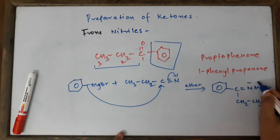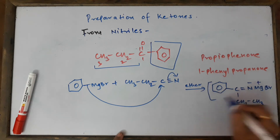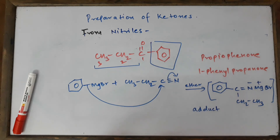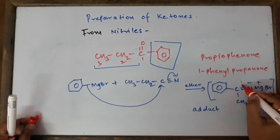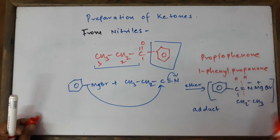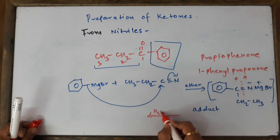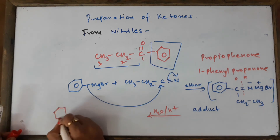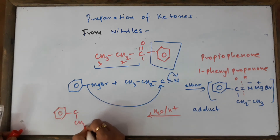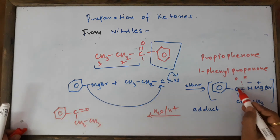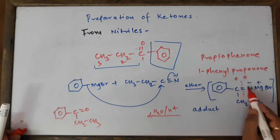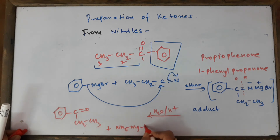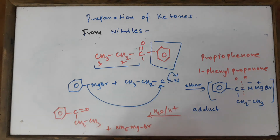Once the adduct is formed, break it with water using acidic hydrolysis (H₂O / H⁺). Carbon takes the oxygen, nitrogen takes the hydrogen. We get phenyl-C(=O)-CH₂CH₃ — that is propiophenone — plus NH₂MgBr (amino magnesium bromide). So with these methods, you can prepare any ketone of your choice.